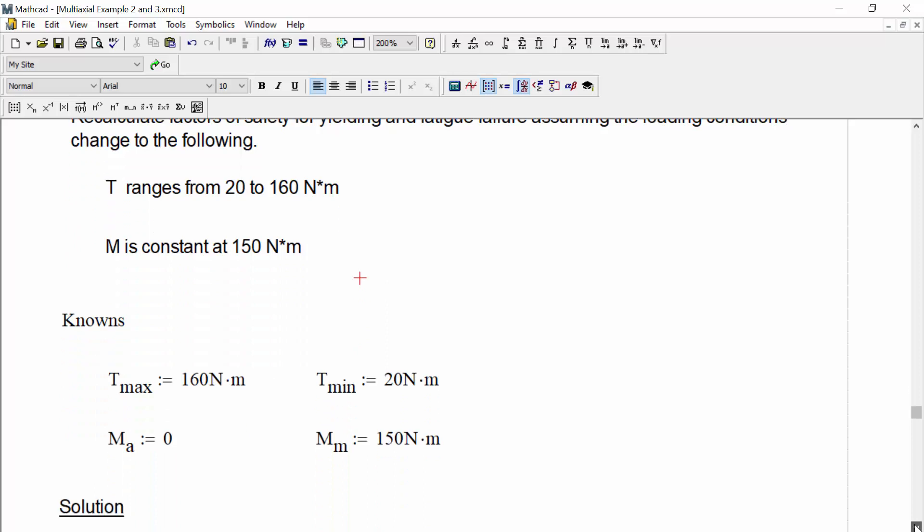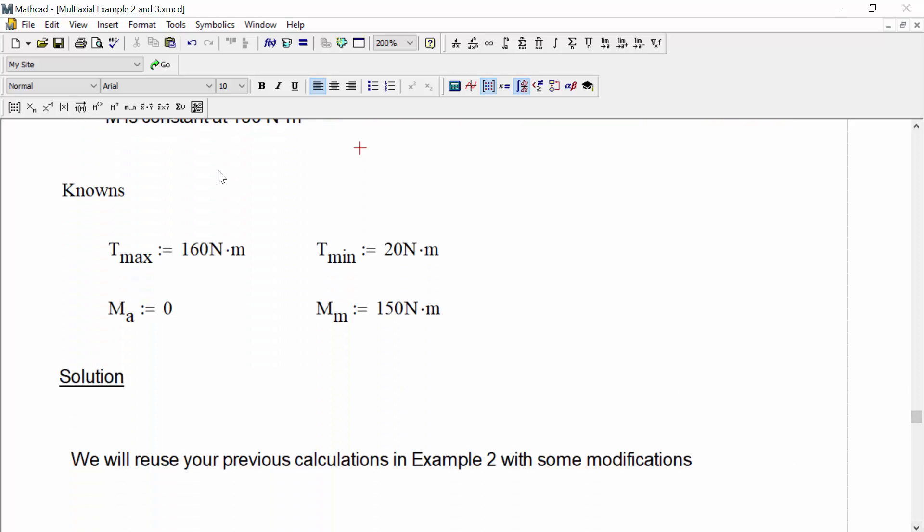So with these changes, let's update our knowns. We're now going to say that we have a T max of 160 newtons times meters, a T minimum of 20 newtons times meters, a moment amplitude of zero because there is no amplitude, but a mean bending moment of 150 newtons times meters because it's a static value. A static loading case we can describe as a mean load.